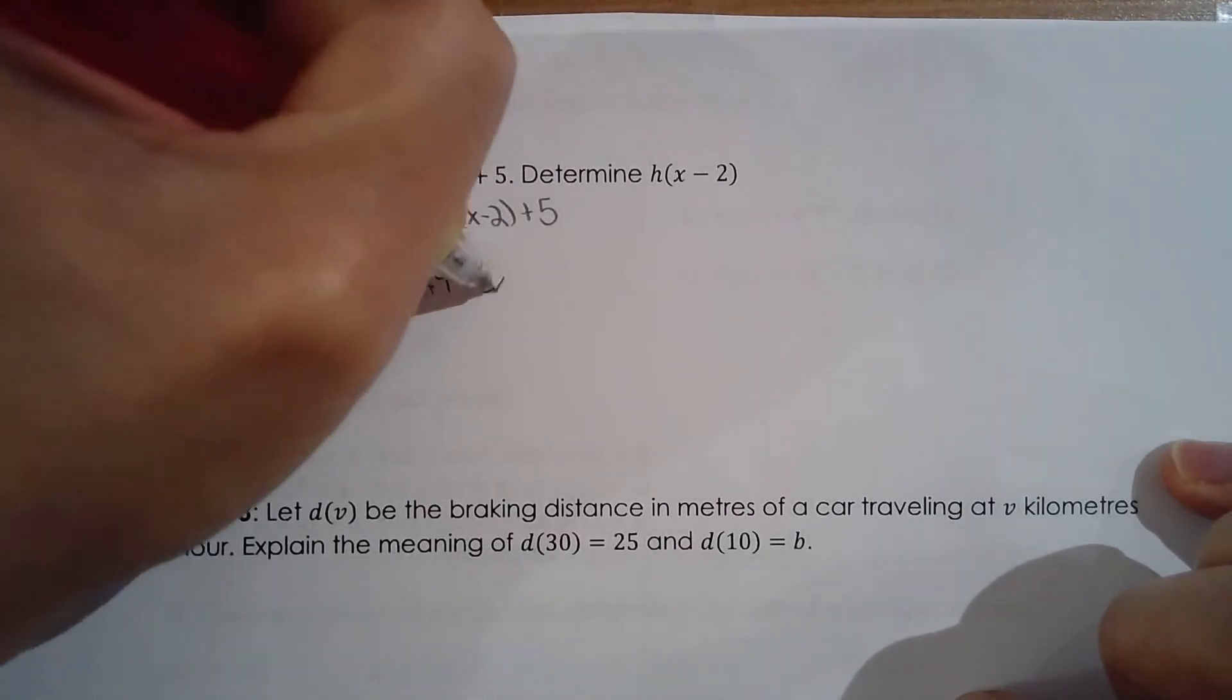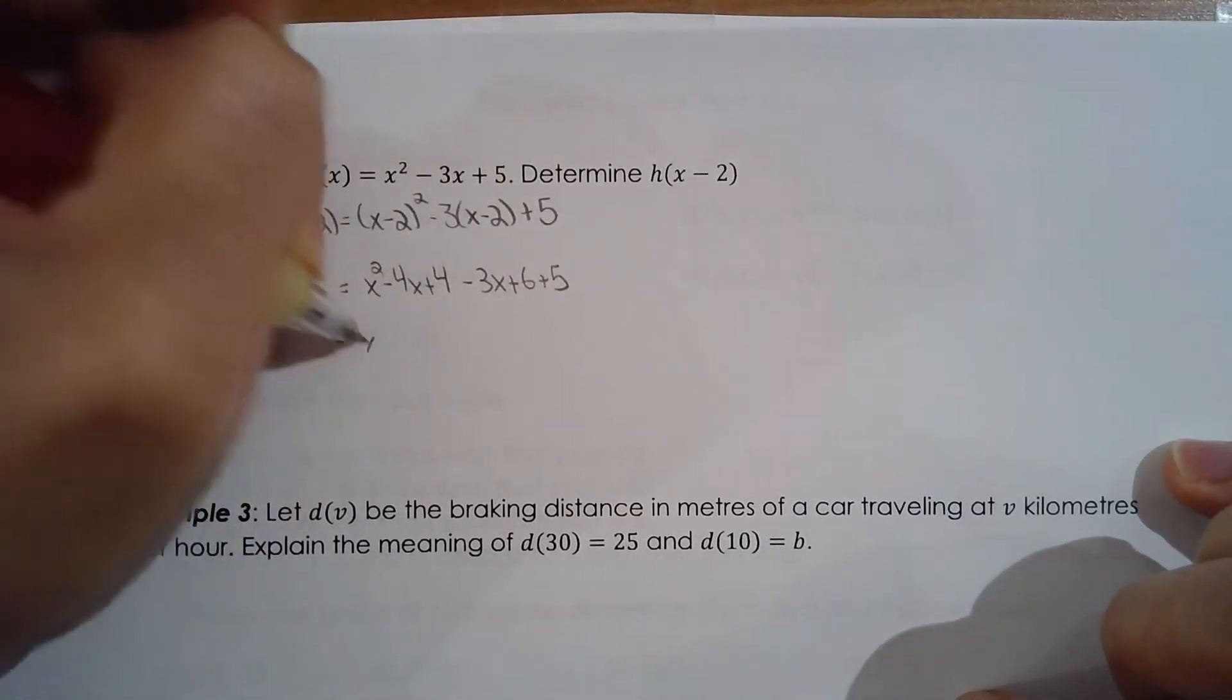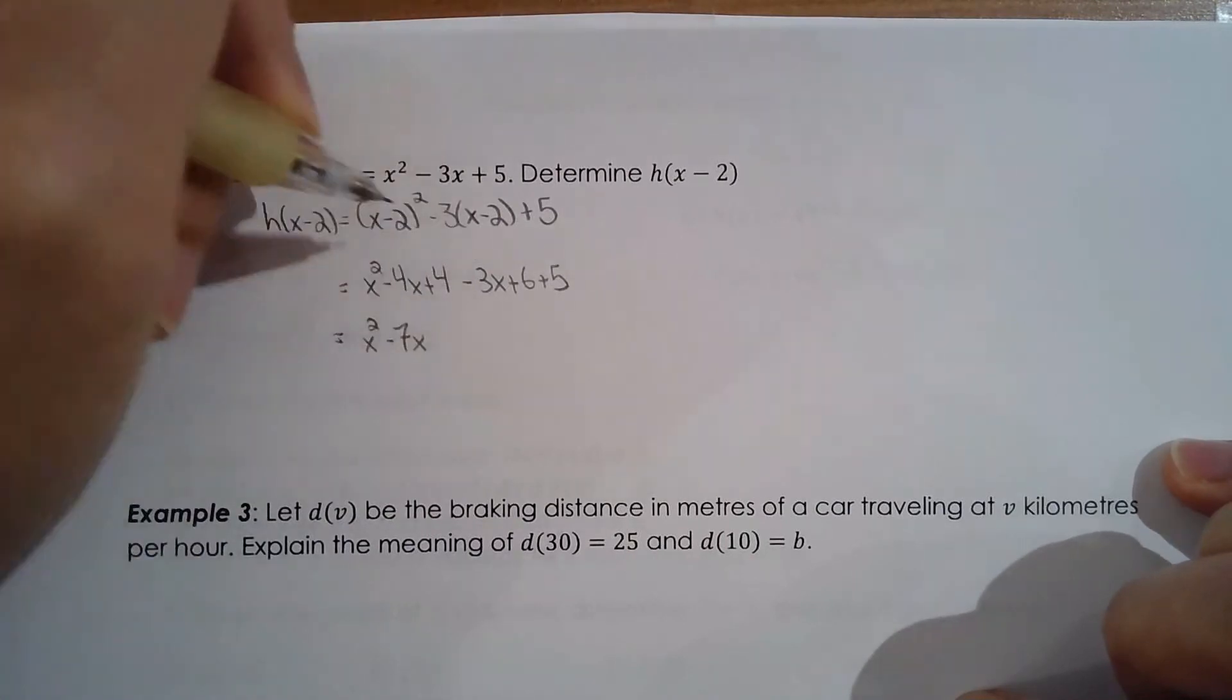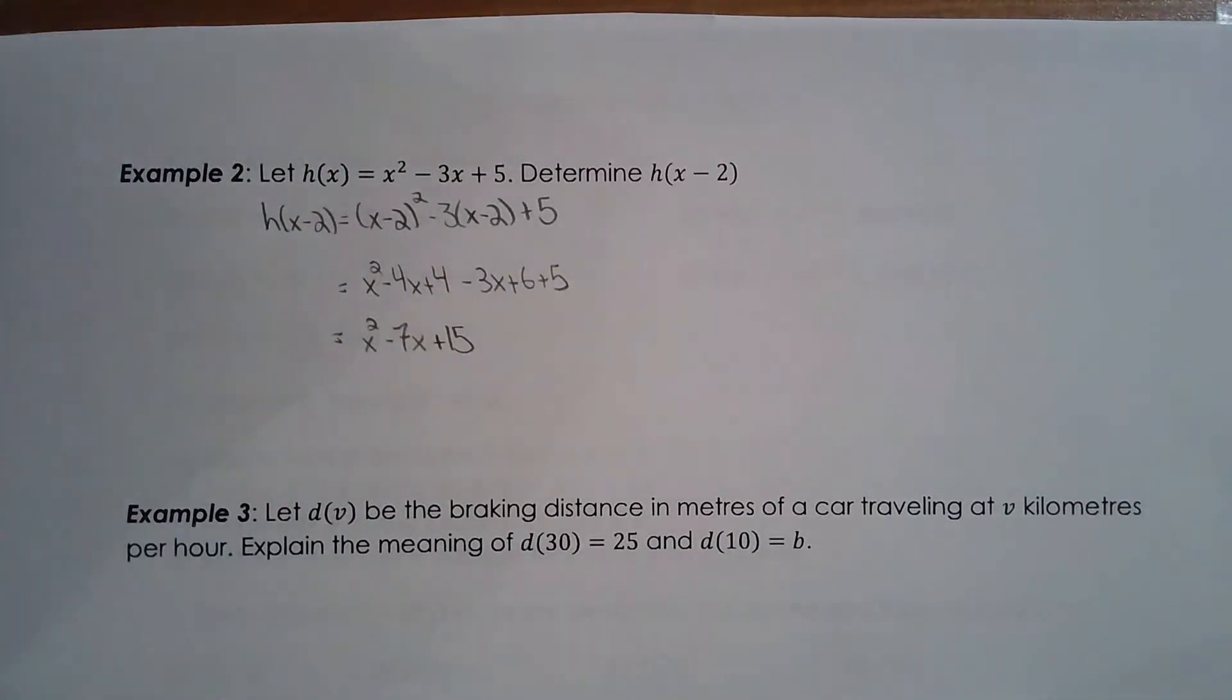Expand and simplify. So perfect square trinomial, and then distribute the negative 3. Collect your like terms, negative 4, so negative 7x, 6, 15. So when the input is x minus 2 for h of x, the output is x squared minus 7x plus 15.